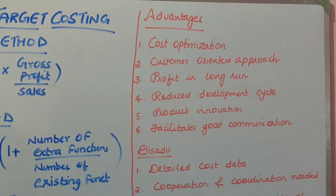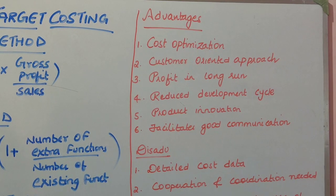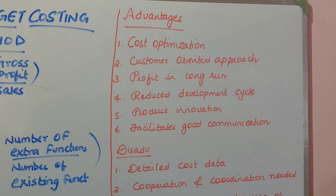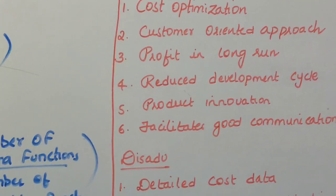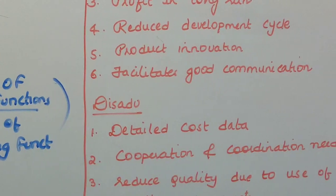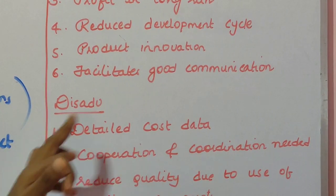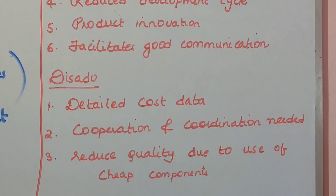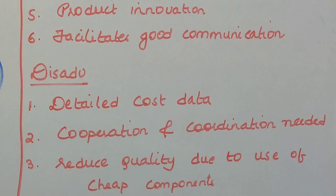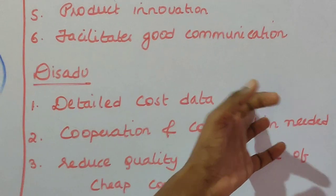The fifth advantage is product innovation: when you use target costing, innovative products with high quality can be produced. The sixth advantage is that it facilitates good communication — there is good communication among all team members in the organization so that you can produce a product at the desired price. Coming to the disadvantages: the first is the need for detailed cost data. A company must have detailed cost data in hand, and only on the basis of actual cost data can it apply target costing; without that, it may result in losses.